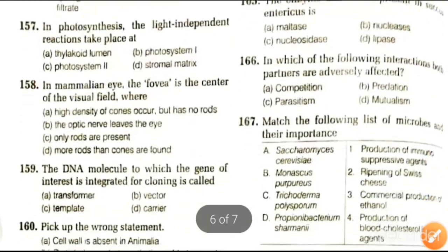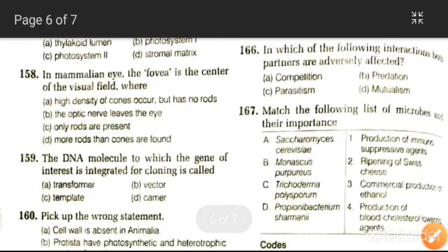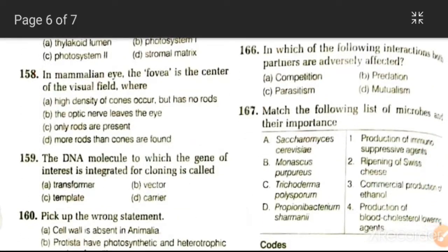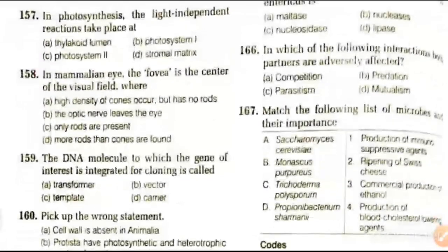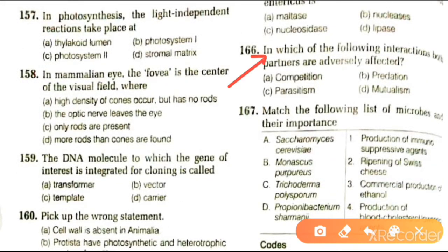Next question: in which of the following interactions are both partners adversely affected? Options are competition, predation, parasitism, and mutualism. The answer is competition.